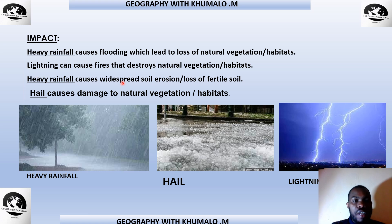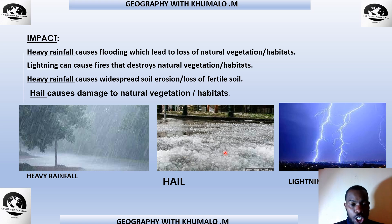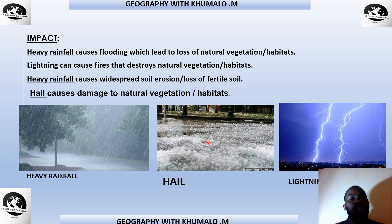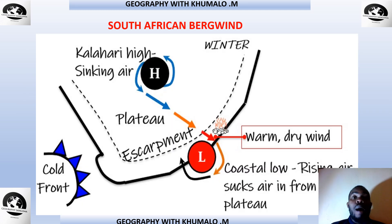Heavy rainfall also causes widespread soil erosion and loss of fertile soil. Hail is another impact — it comes in round, ice-like forms. If learners ask what hail is, it is rounded ice that falls during thunderstorms. Hail causes damage to natural vegetation and habitats. Those are the impacts of the line thunderstorms, Grade 12. Now we move on to the South African berg winds — these are winds that blow down the escarpment and are known as hot, dry winds.